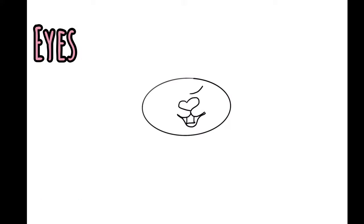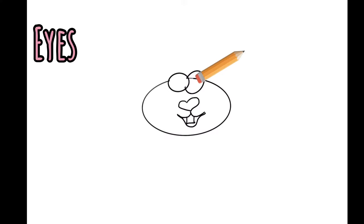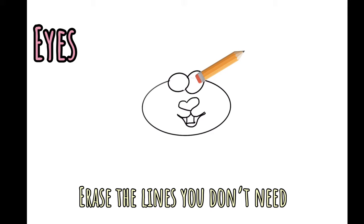Now it's time for the eyes. So one oval and then you can even make the second one a little different shape. Maybe it's a circle, maybe it's a little bit to the side. And notice that my eyes are a little larger than the head. I thought this would just be a cute little feature.